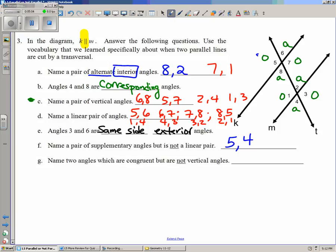So, for example, if I took angle 4 and compared it to angle 6, they are equal, but they're not vertical angles because they don't share the same vertex. They clearly have different vertices.